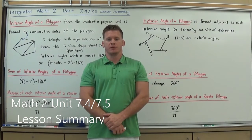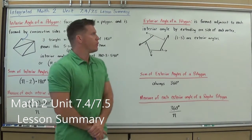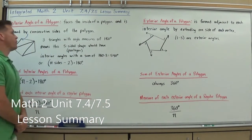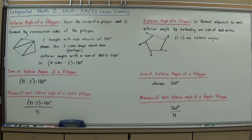Hi, I'm Mr. Richmond and this is your Integrated Math 2, Unit 7.4 and 7.5 Lesson Summary. We're now going to start to look at shapes beyond quadrilaterals. We're going to look at some polygons and some basic info on the interior and exterior angles of polygons and the sum of those measures.